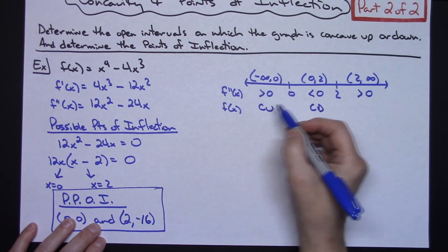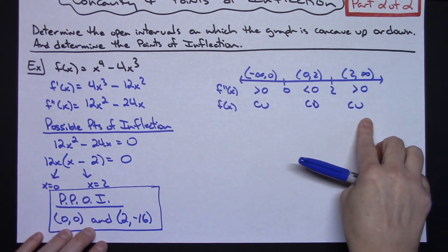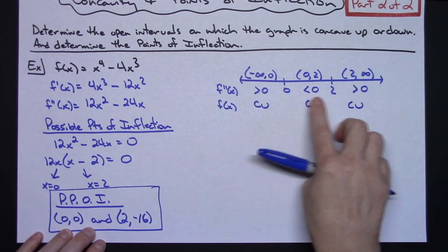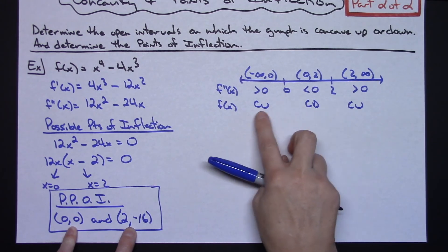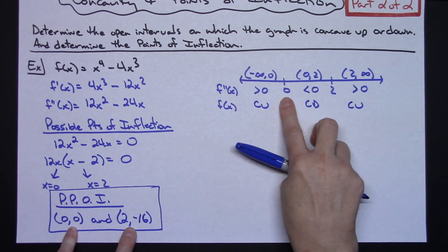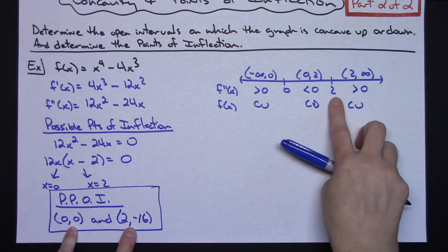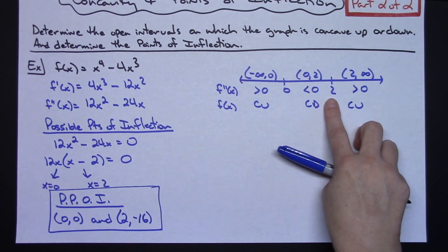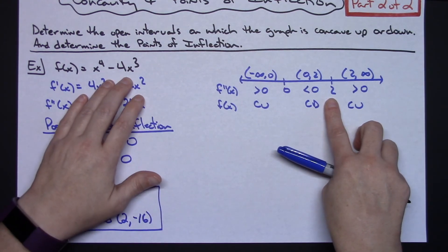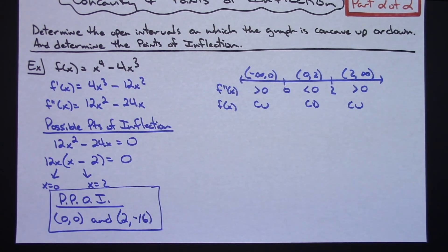When the second derivative is positive or greater than zero, the original function is concave up. When the second derivative is less than zero, the original function is concave down. Then greater than zero again means concave up. So the pattern is: concave up, concave down, concave up. At zero and at two the concavity changes, and since this is a polynomial it is defined and smooth everywhere, confirming those are actual points of inflection.